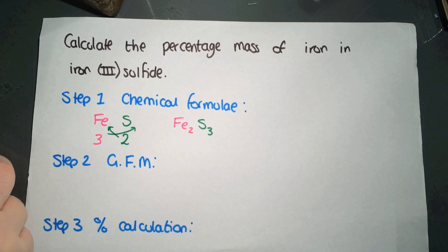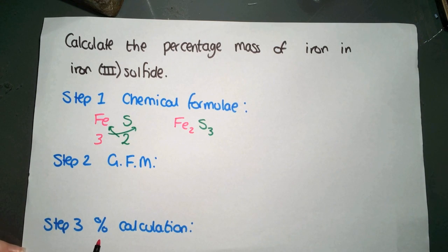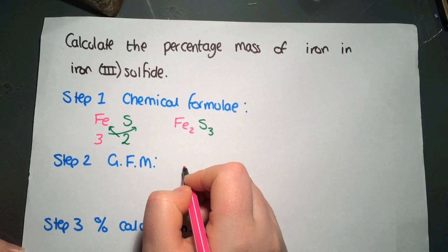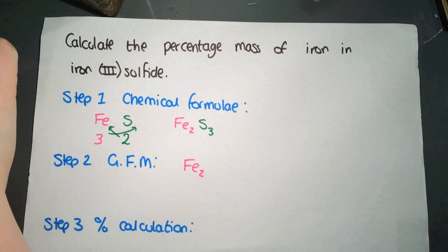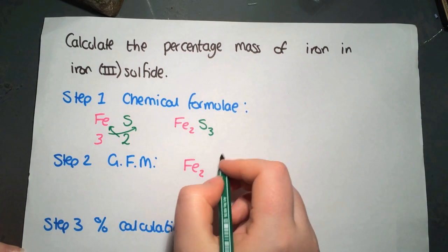This is our first step here looking at the chemical formula. We then take the chemical formula and we calculate our gram formula mass from it. So we have Fe2, S3.